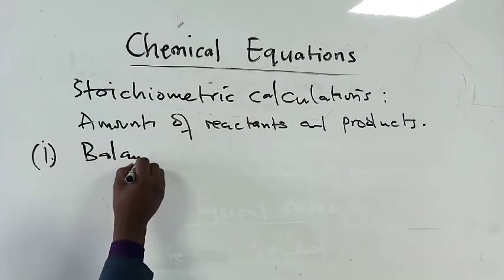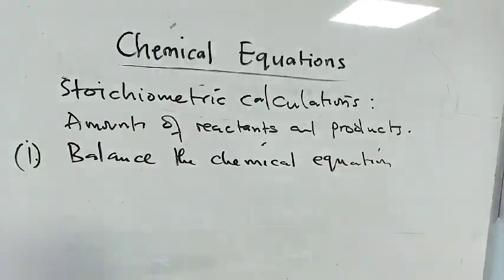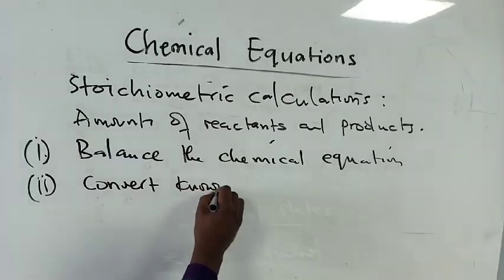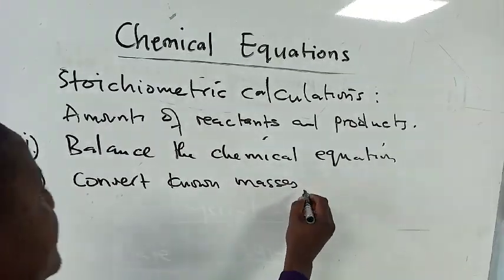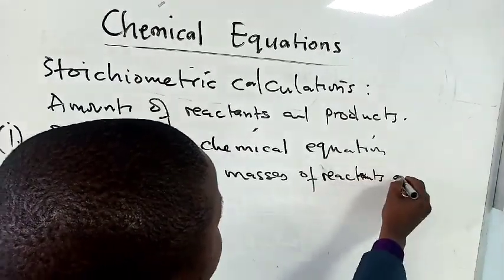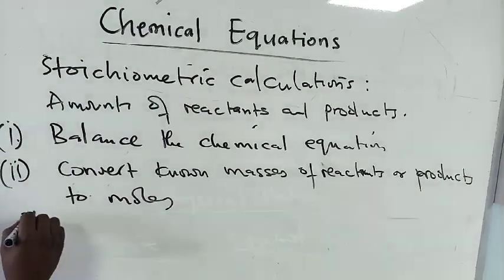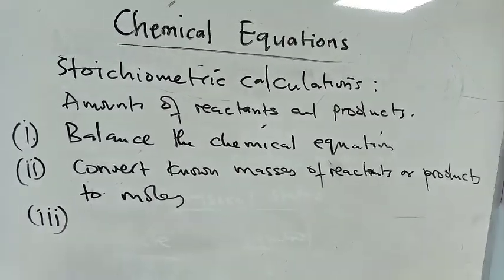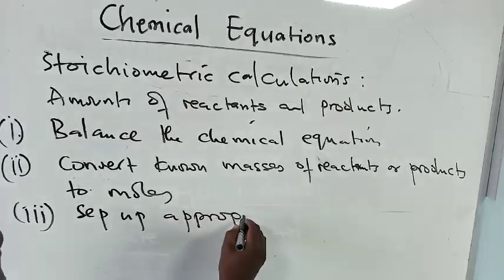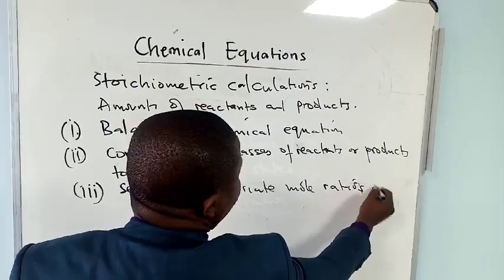Once the chemical equation is balanced, step two is to convert the masses of the reactants or products to moles. Then step number three: we use appropriate mole ratios of the species involved. Step four: convert moles to grams if required. These are the steps we need to follow.